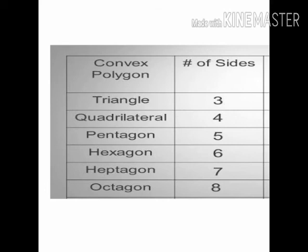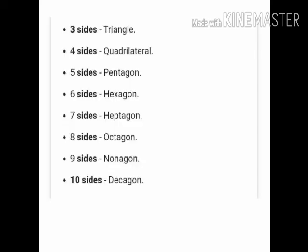Hexagon has six sides, so seven faces. Heptagon has seven sides, so plus one is eight faces. Octagon has eight sides, so octagonal pyramid has eight plus one, nine faces. So number of sides plus one is the number of faces.